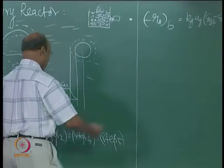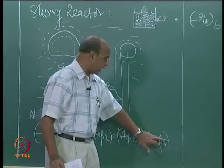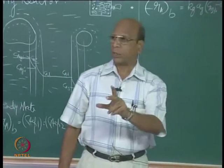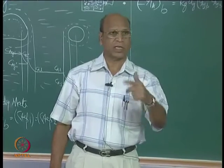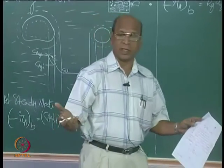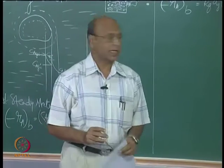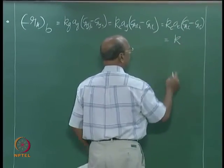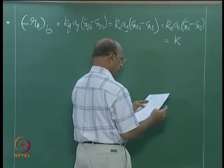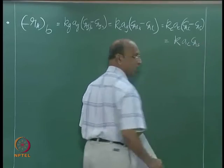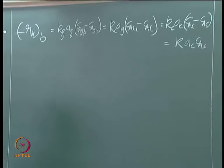What is the next step? Next step is rate of reaction. For the rate of reaction step, you have to find out separately whether it is first order, second order, or some other order - or it can be any type of equation. For simplicity, we will take this as simply K times A_c times C_AS, where the reaction is taking place on the surface.